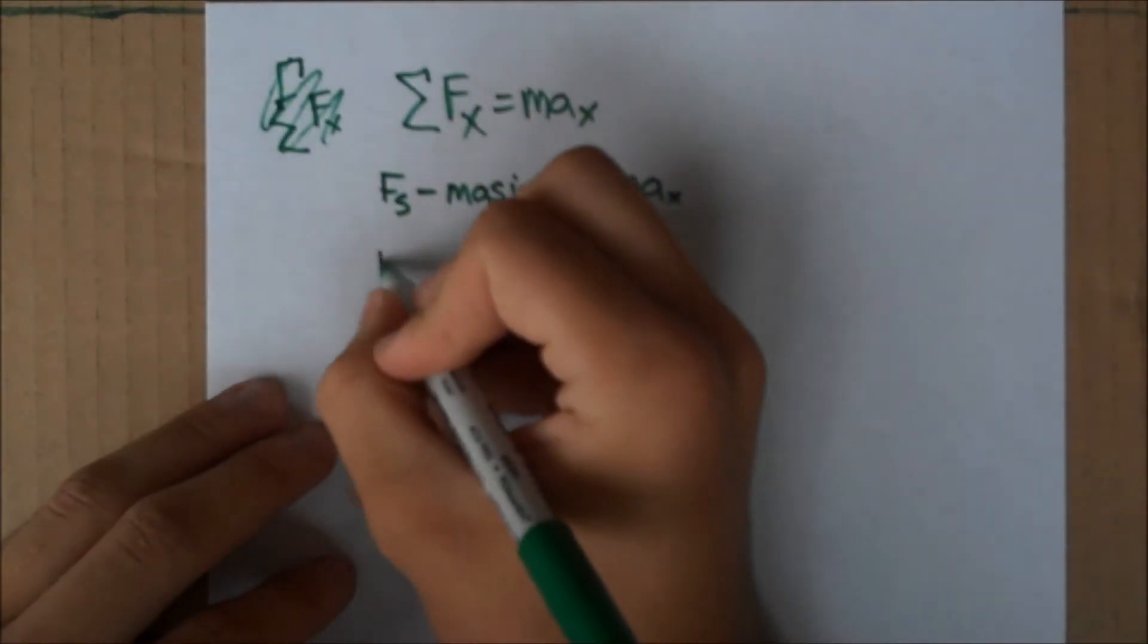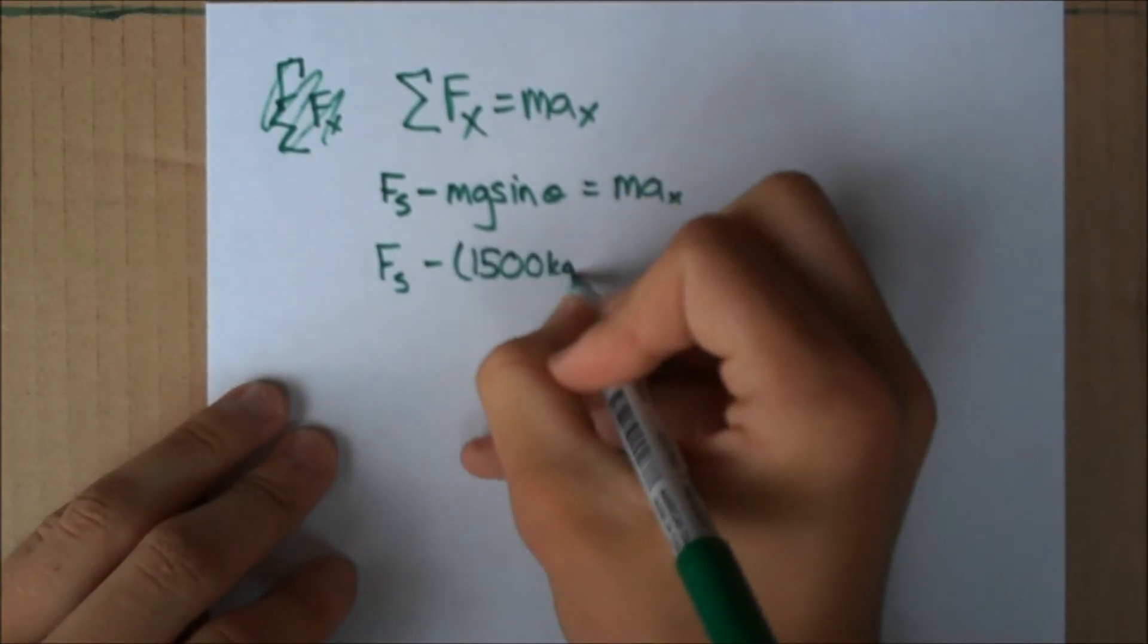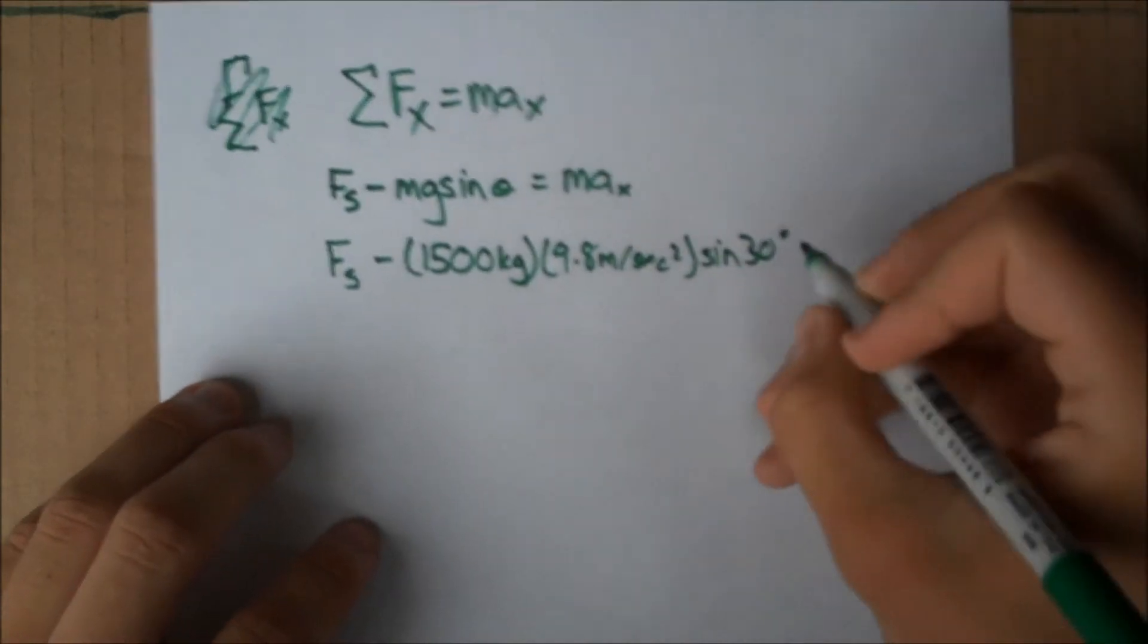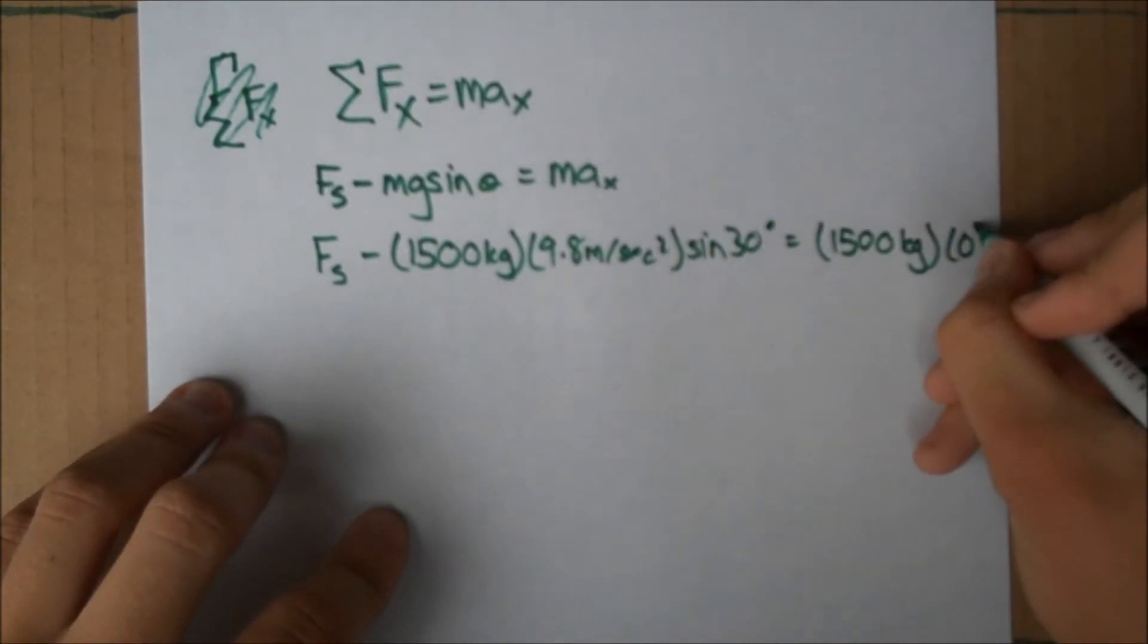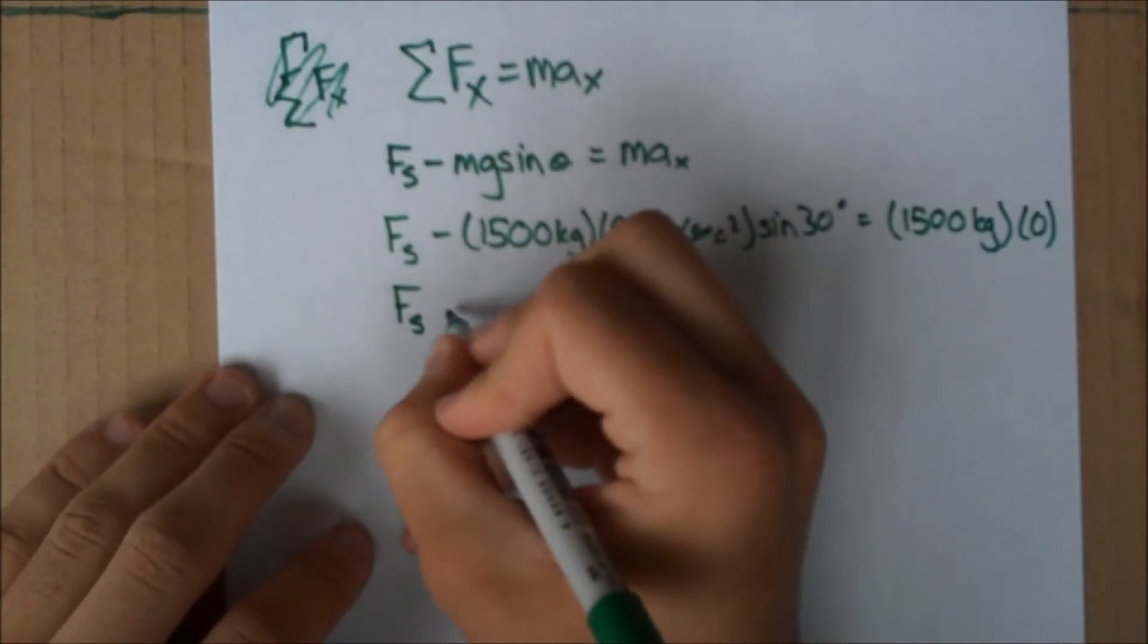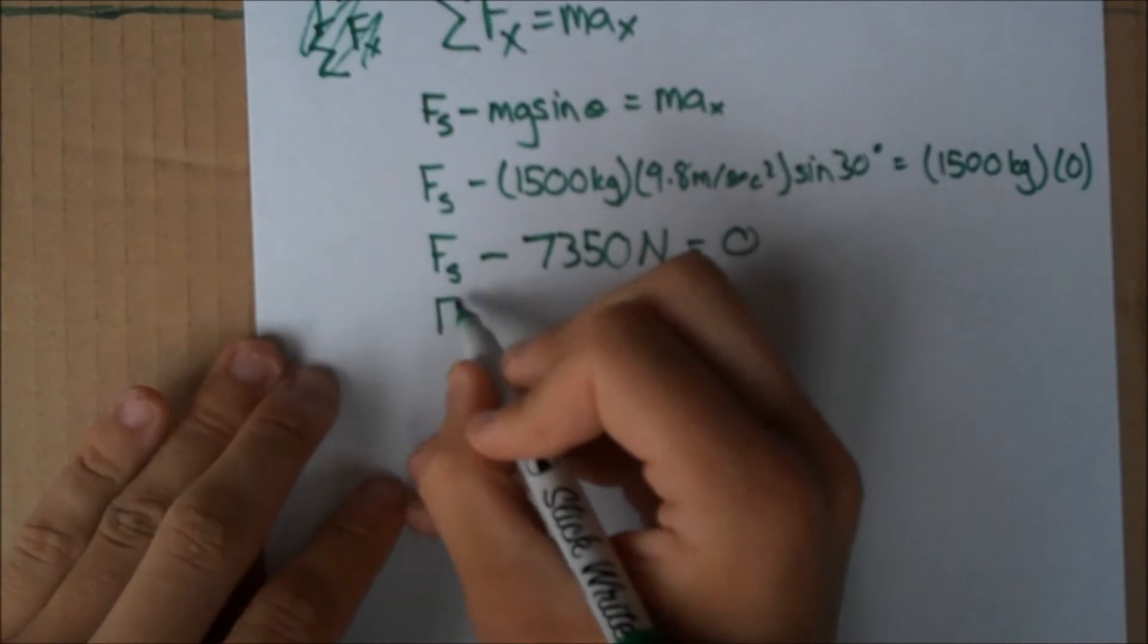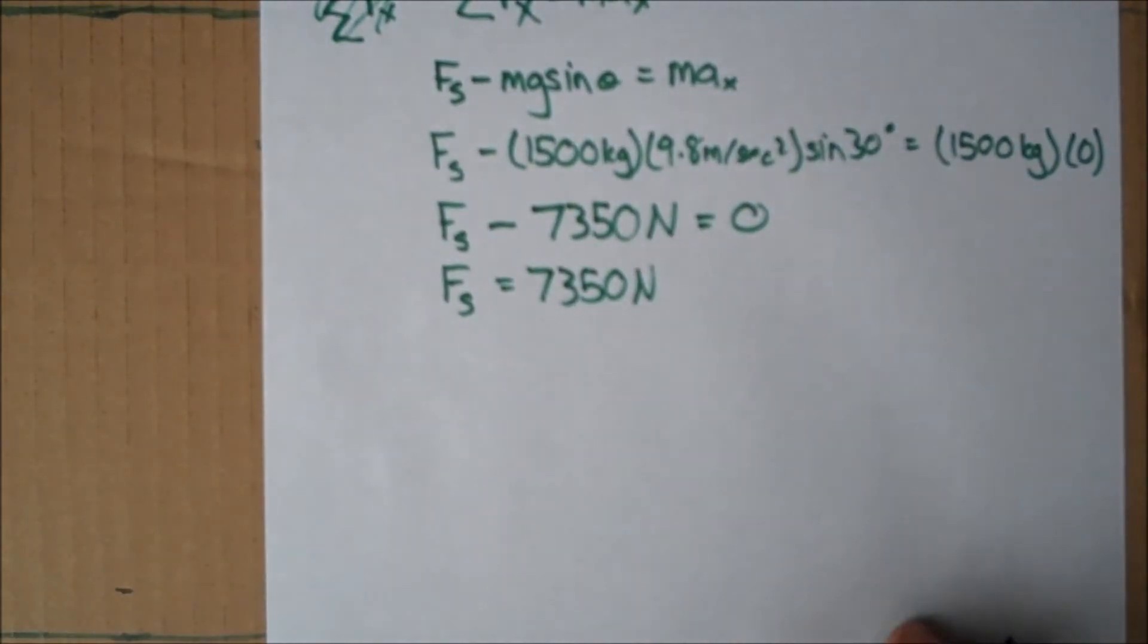If we plug in our values, we're trying to solve for force of static friction, so we'll leave that. Plug in the mass, 1,500. G is 9.8 meters per second squared, and theta is 30 degrees. The acceleration is zero because it is parked on the hill without moving. If we simplify, force of static friction turns out to be 7,350 newtons. So the force of static friction equals 7,350 newtons. That's your answer for part B.